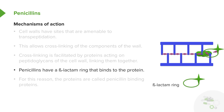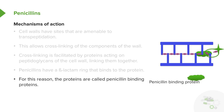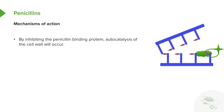Penicillins have a beta-lactam ring that binds to that protein, and for this reason the proteins are called penicillin-binding proteins. A penicillin-binding protein is where the penicillin is going to be active. If you inhibit the penicillin-binding protein, auto-catalysis of the cell wall will occur and the cell wall will break down.